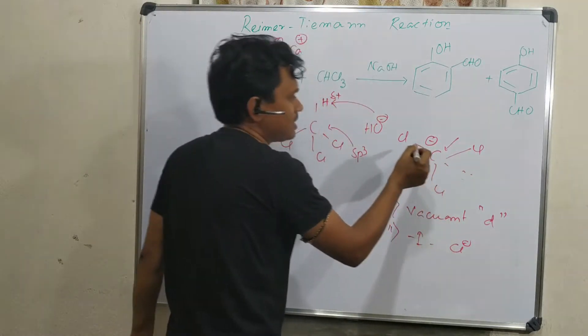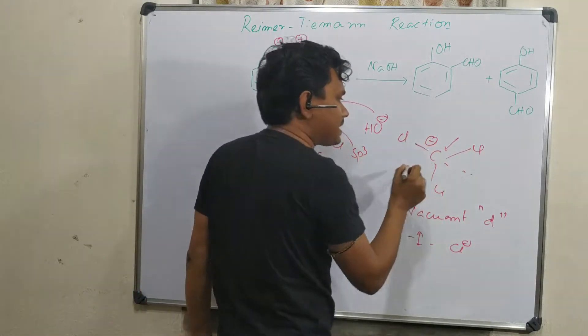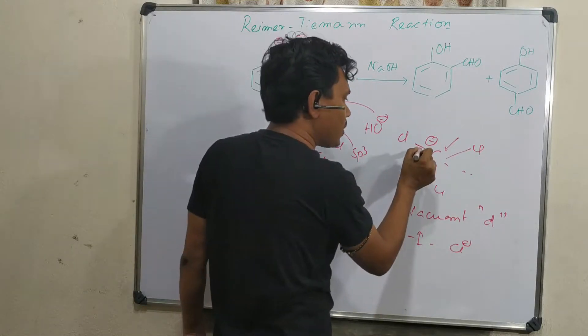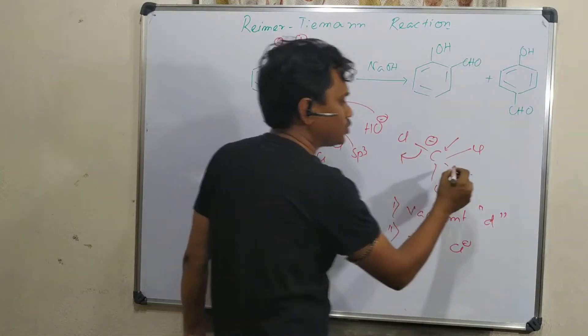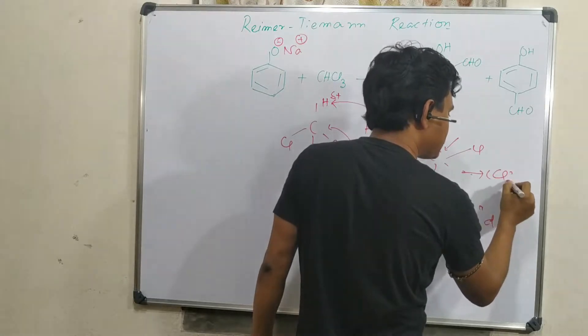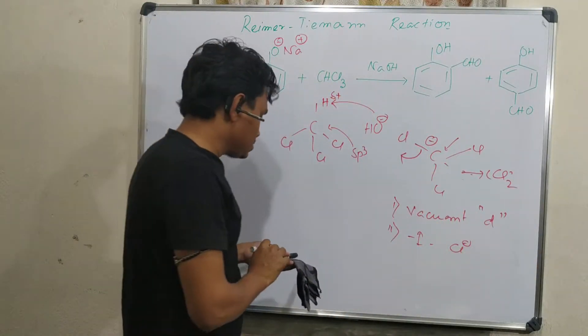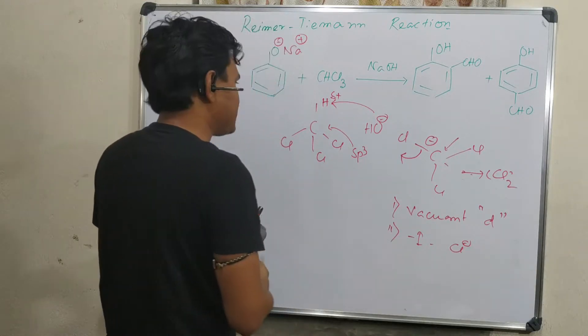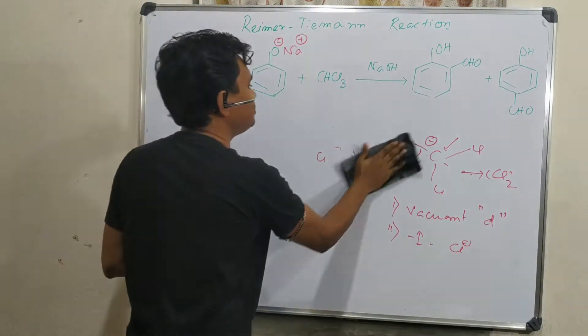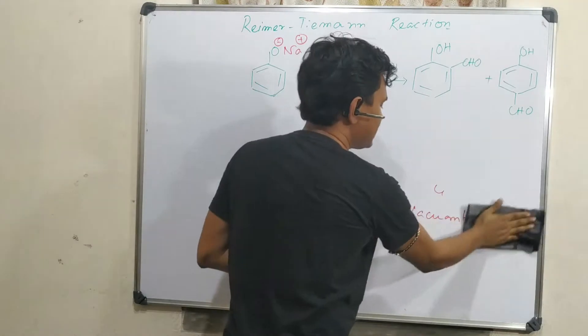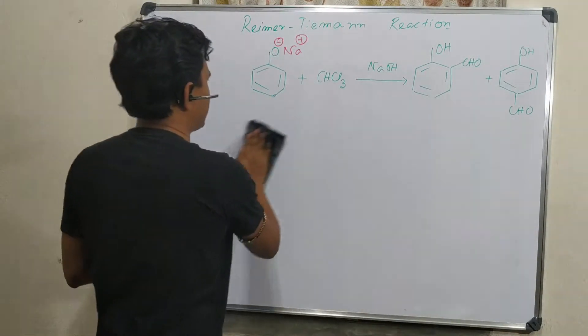After that, since this carbon is attached to 3 chlorine atoms, it undergoes elimination of one chloride to produce dichlorocarbene. I have explained why dichlorocarbene is stabilized. So in this way, after the acid-base reaction and halide elimination, a reactive intermediate CCl2 is produced.